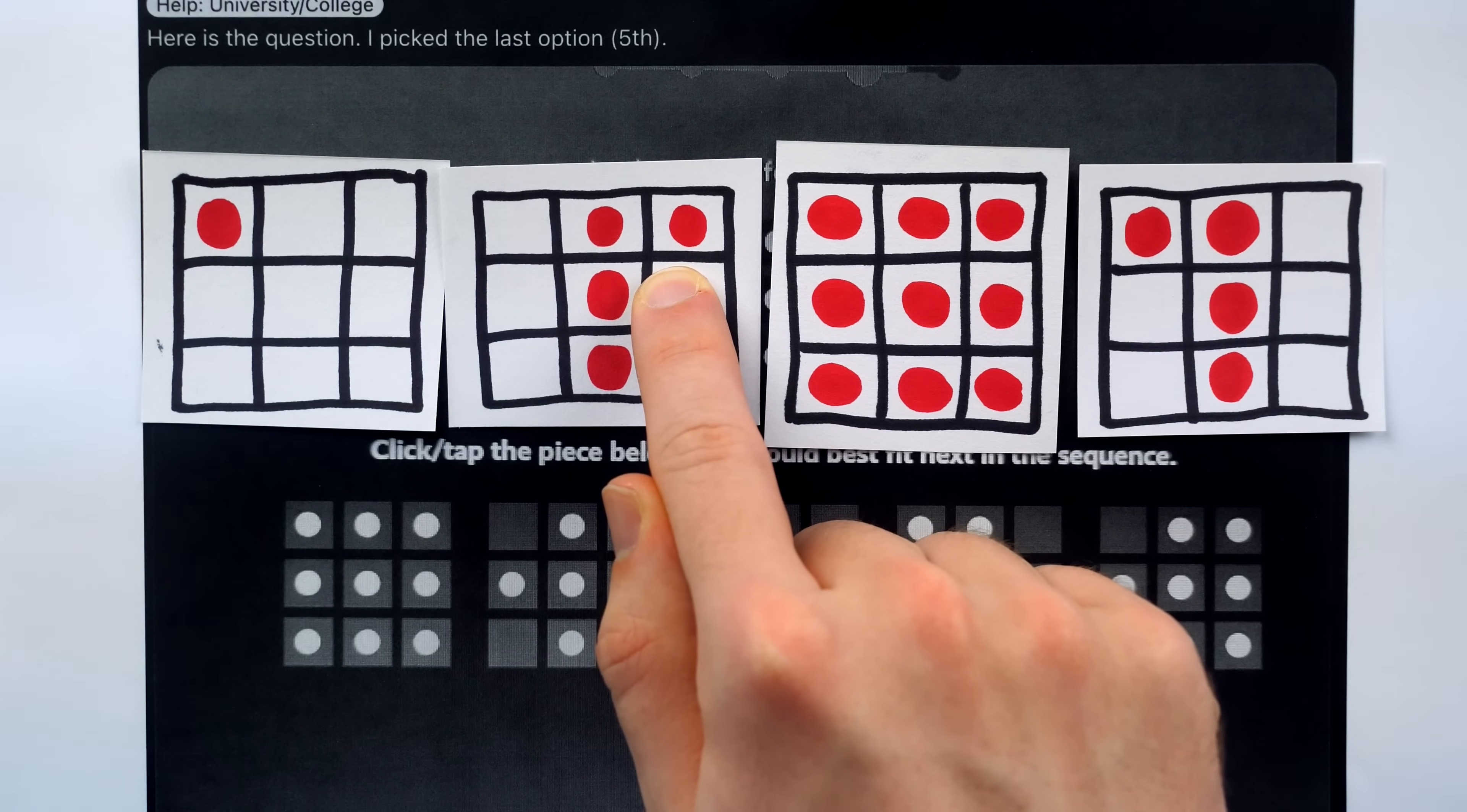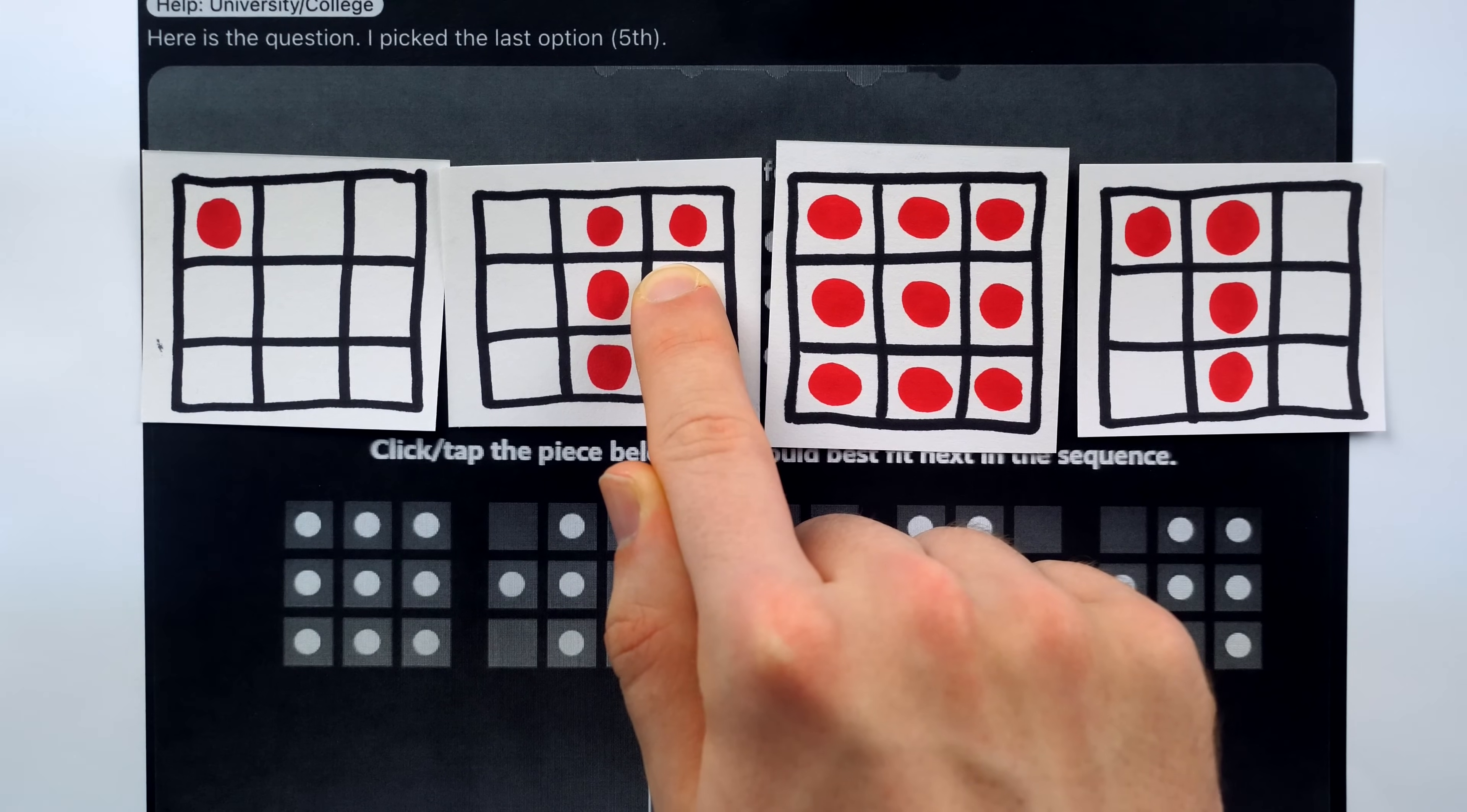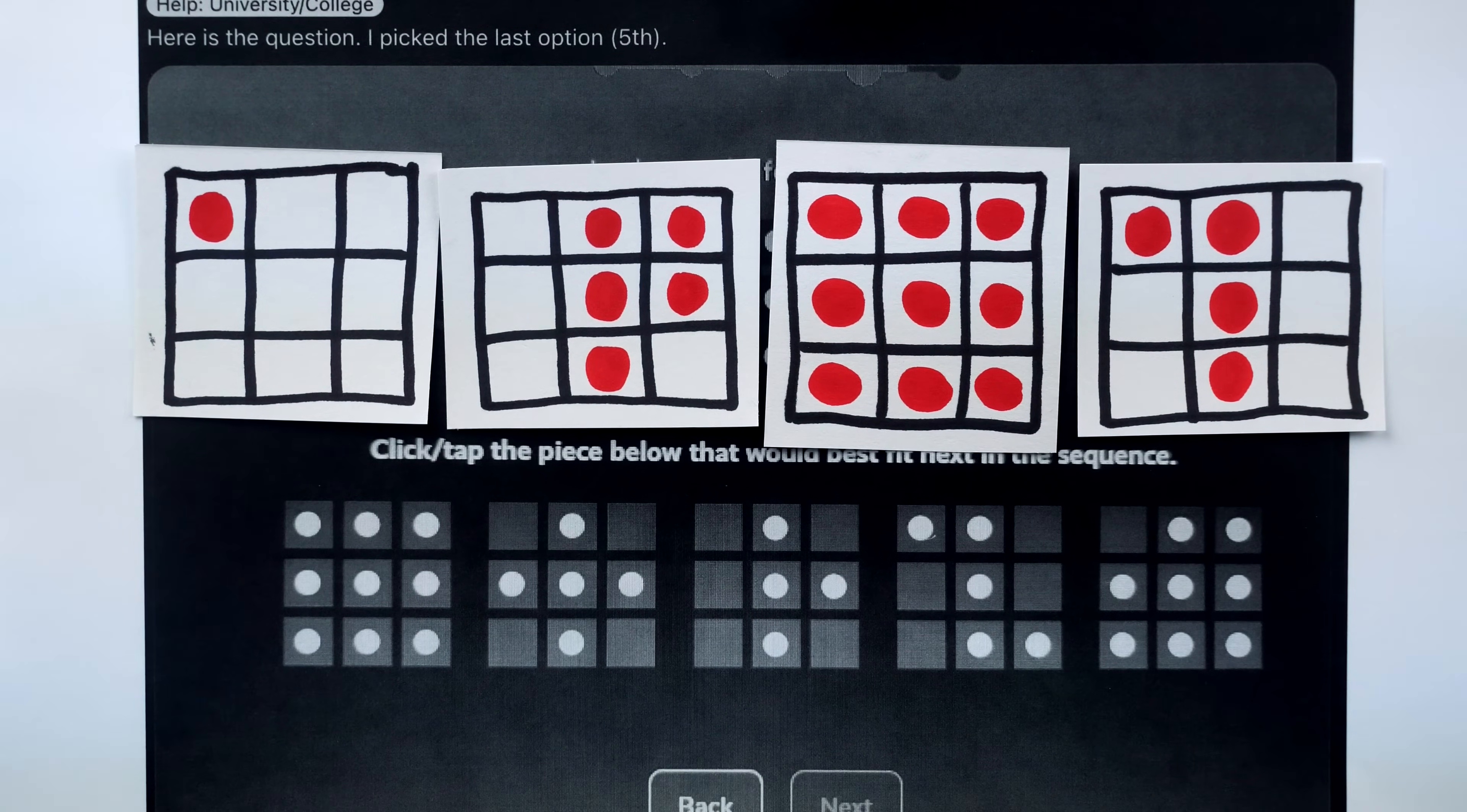We may expect, then, that this symmetry should continue, and that the correct answer, the next grid in this sequence, should be the mirror image of this first grid in the sequence. That is, we might think the correct answer is a grid that has only a dot in the upper right corner, thus completing this mirror image. But, of course, that is not one of the options.